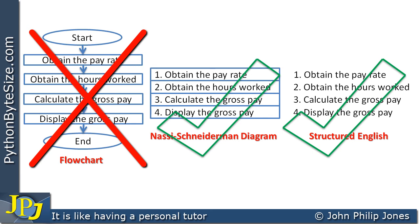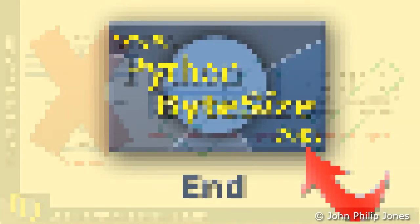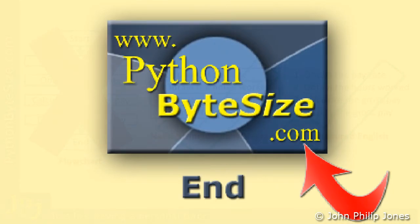It's important to realize that sequence is just one of the program constructs. The other constructs particularly interesting for programmers are selection and iteration — another word for iteration is repetition. But sequence is the most fundamental one: this is where a program performs one step, then another step, then another step, in a sequence as we've described. Check out the supporting website for these videos and consider subscribing to the YouTube channel for an automatic update every time a new Python video is uploaded.